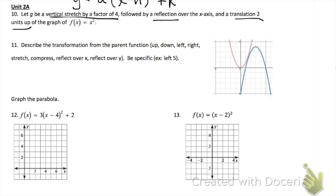Problem 11 is asking us to describe the function from the parent function to the transformed function. This one is the parent function because it starts at the origin. You're going to say that it moved right, it moved up, it also went down — use specific words for those, and make sure you tell me how many spots it moved each way.